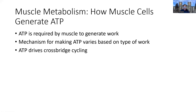ATP is required for muscles to generate force, and the specific way that happens is by driving cross-bridge cycling. The myosin head requires ATP to drive the power stroke — that is the exact spot where ATP is required for muscle contraction. There are different types of mechanisms that muscles can use to make ATP, and that is where fiber types will differ.